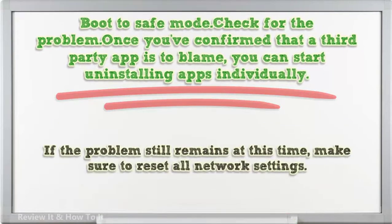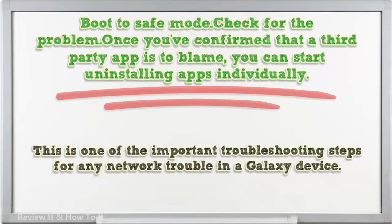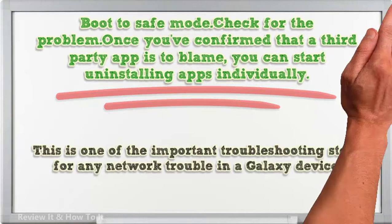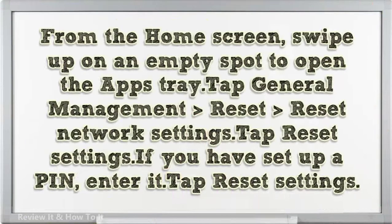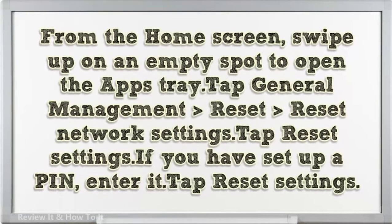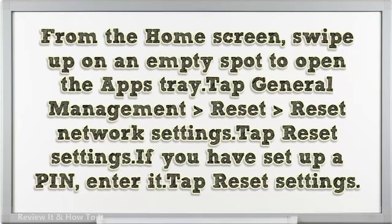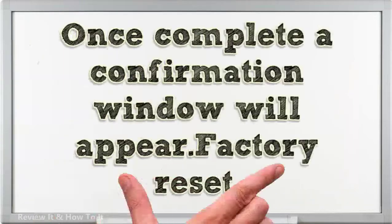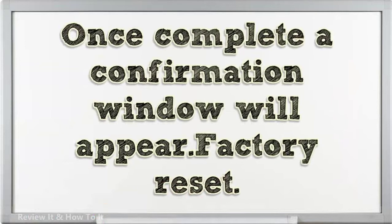If the problem still remains, make sure to reset all network settings. This is one of the important troubleshooting steps for any network trouble in a Galaxy device. From the home screen, swipe up on an empty spot to open the apps tray > tap General Management > Reset > Reset Network Settings > tap Reset Settings. If you have set up a PIN, enter it, then tap Reset Settings. Once complete, a confirmation window will appear.